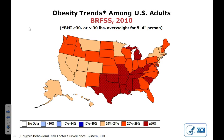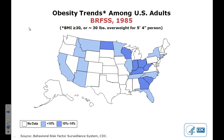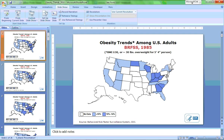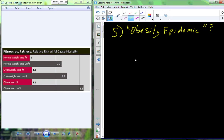In fact, by 2010 — the last data I have — all of the blue colors representing 10%, 10 to 14%, and 15 to 19% are no longer even represented on the map. We've completely changed the map, so now we only have darker oranges, yellows, and reds representing a pretty high and significant number of individuals in each state considered to be obese.